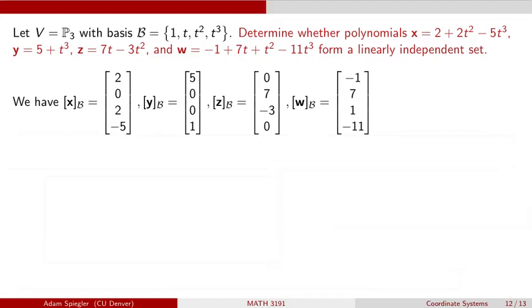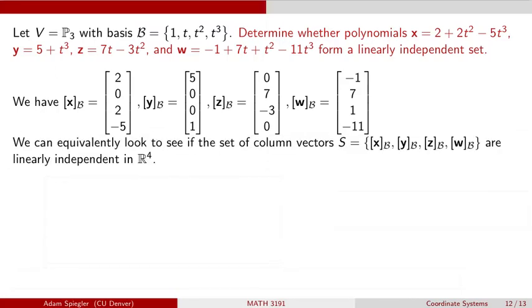And we do the same for the other three vectors in this set. And now, because this coordinate mapping, which is going to take each of these vectors and map them to a column vector in R4, because this coordinate mapping is an isomorphism, it is onto and 1 to 1, and it's a linear map, that if these four column vectors happen to be linearly independent in R4, then that's going to tell us that these four polynomials in P3 are also going to be linearly independent.